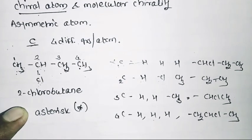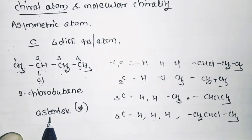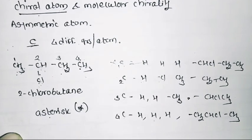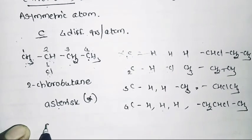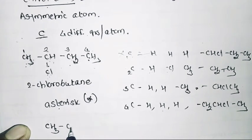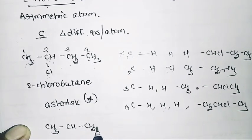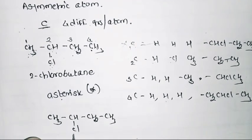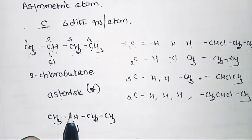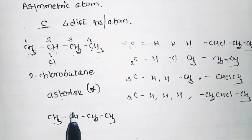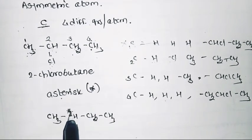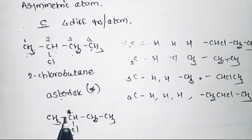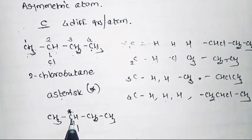This chiral carbon is denoted by the symbol asterisk (*). In this example of 2-chlorobutane, the second carbon is the chiral carbon and it is denoted by the asterisk symbol, meaning it is a chiral carbon.